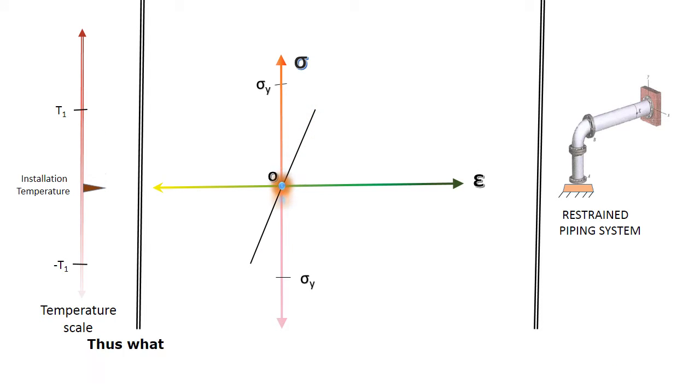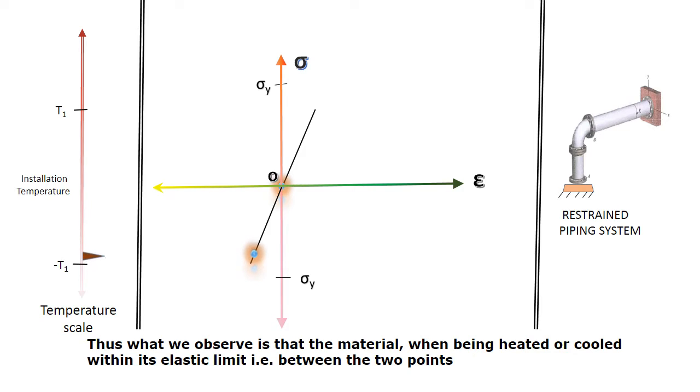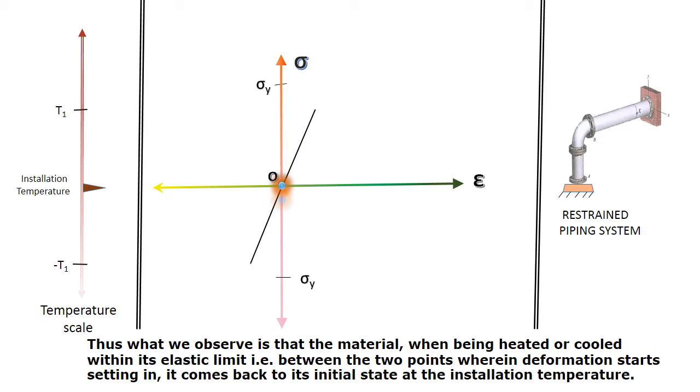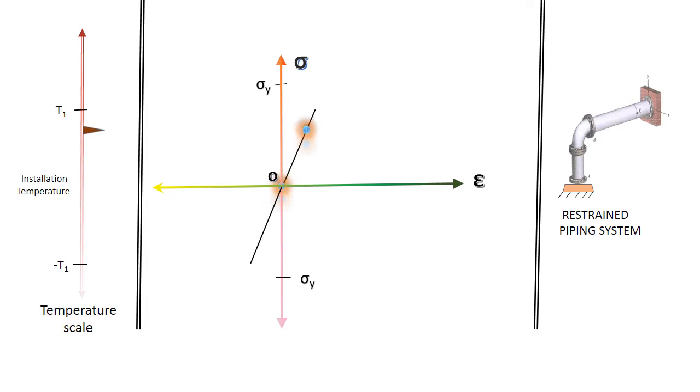Thus, what we observe is that the material when being heated or cooled within its elastic limit, that is between the two points when deformation starts setting in, it comes back to its initial state at the insulation temperature. That is, it remains at zero stress and zero strain condition irrespective of the cycle of thermal loadings performed.